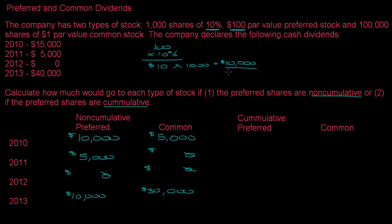You always pay preferred first whether it is non-cumulative or cumulative. What makes cumulative preferred stock different is that the unpaid amount will accumulate until the next dividend is paid. Even if the preferred shareholders do not get their entire dividend, we keep track of how much they are owed and make sure they receive that money when the next dividend is paid. That amount is called dividends in arrears.